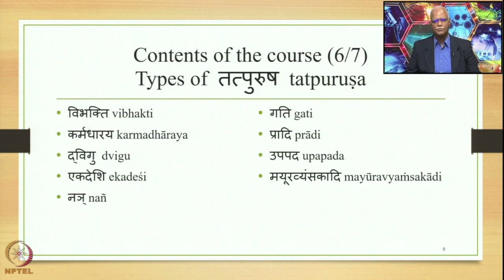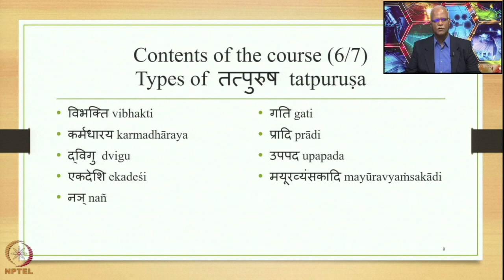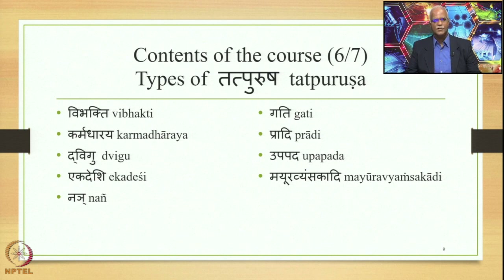We did not mention Prathama Tatpurusha — there is a specific reason, because there is one more big umbrella within Tatpurusha called Karma Dharaya. Panini defines Karma Dharaya as Tatpurusha Samanadhi Karanaha Karma Dharaya. It is a very important type of Tatpurusha compound undergoing quite a lot of different formations. Along with Karma Dharaya comes the Dvigu compound, in which Sankhya occupies the Purvapada. Then there is Ekadeshi Samasa, where part and whole is indicated, stated in the initial Sutras of 2.2.